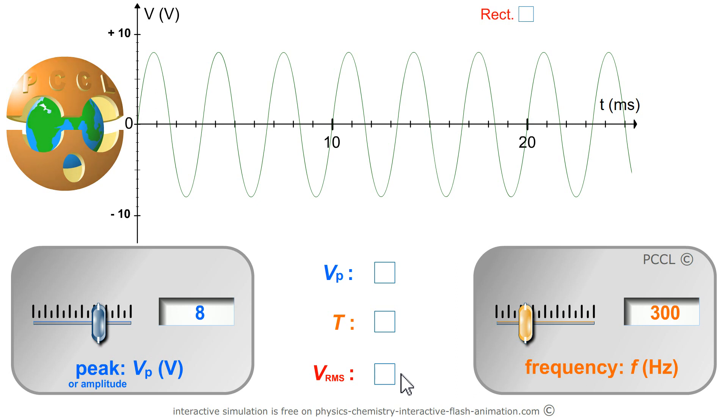Hello everyone! Welcome to PCCL Physics Chemistry. The graph on the screen represents the variation over time of a voltage. It is sometimes positive, sometimes negative alternately.